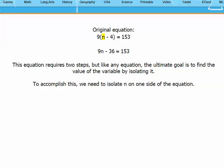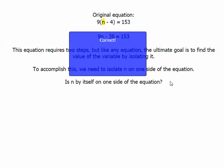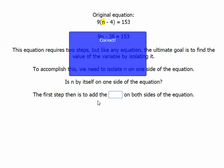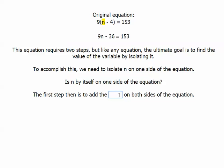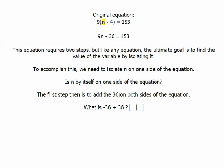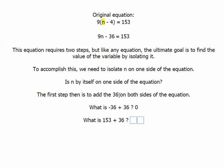Now I do the two-step equation. So I have to isolate n on one side of the equation. Is n by itself on one side of the equation? No, it's not. The first step is going to be, then, to add, because it's minus 36, the 36 to both sides of the equation. Negative 36 plus 36 is 0. 153 plus 36 is 189.